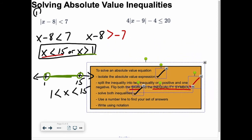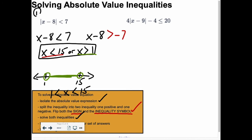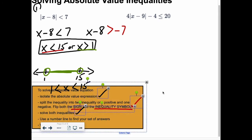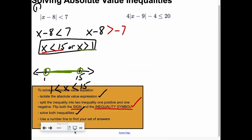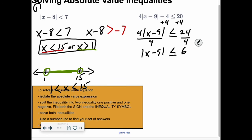Now, let's take a look at that second one. We need to isolate the absolute value expression first. So I'm going to add 4 to both sides. So I'm going to get 4|x - 9| is less than or equal to 24. I'm going to divide 4 on both sides. I'm dividing a positive 4 so it doesn't change the inequality symbol. Well, now I've isolated the absolute value expression.